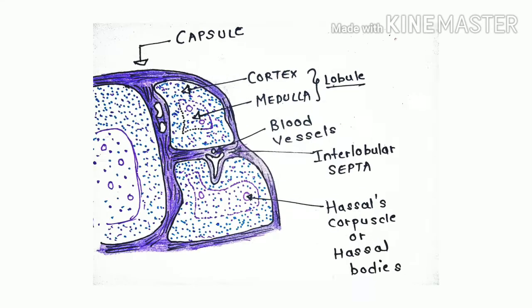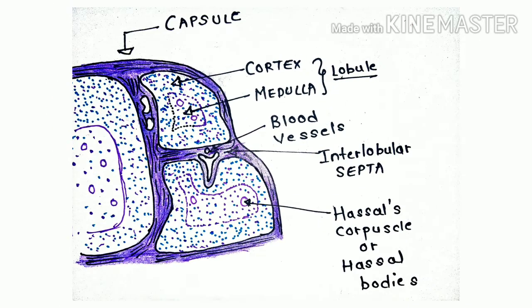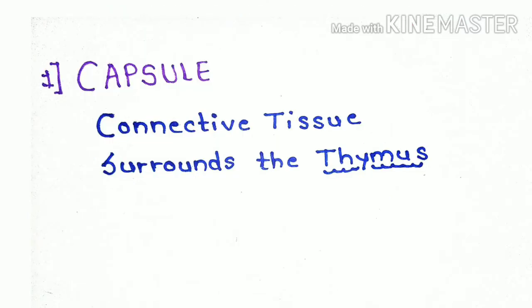Let's move deeper into the supporting framework. The first component is the capsule. As seen in the diagram, the capsule is a structure that surrounds the thymus externally and is made up of connective tissue.